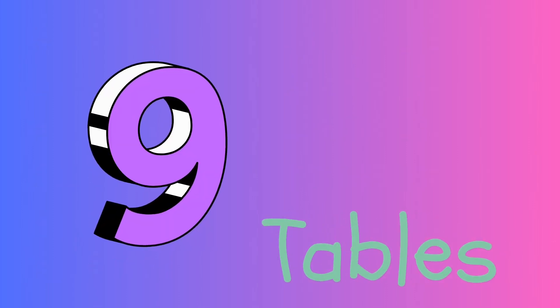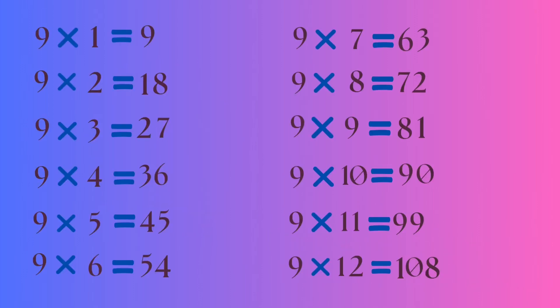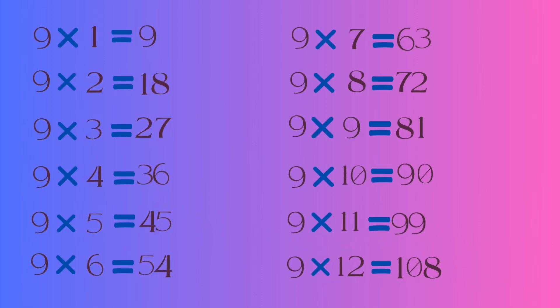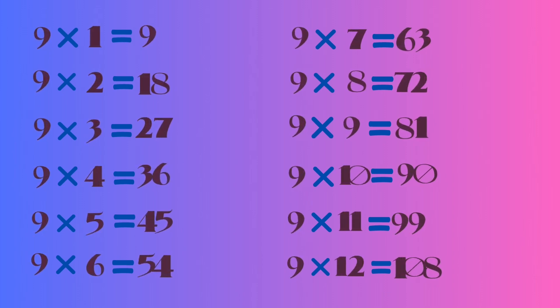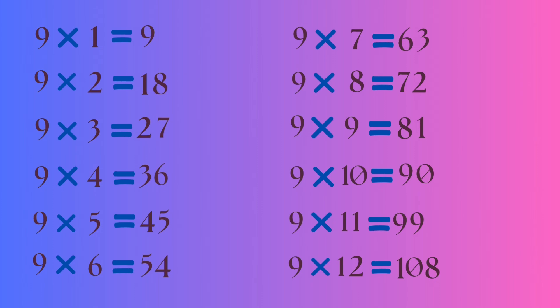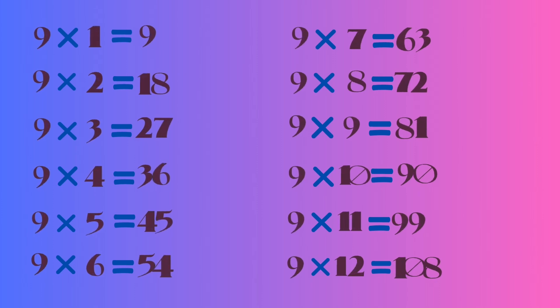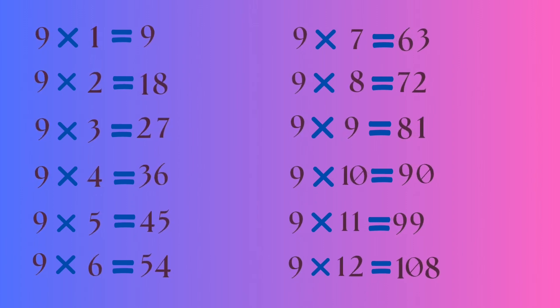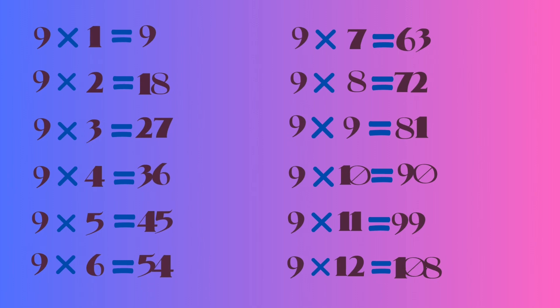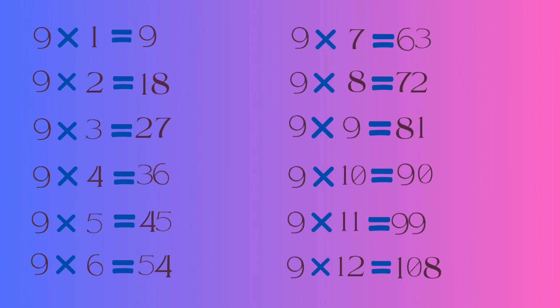9 ones are 9, 9 twos are 18, 9 threes are 27, 9 fours are 36, 9 fives are 45, 9 sixes are 54, 9 sevens are 63.